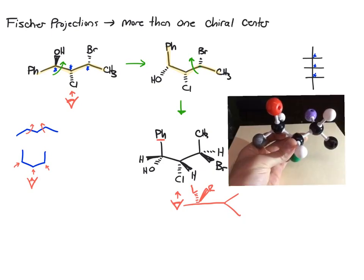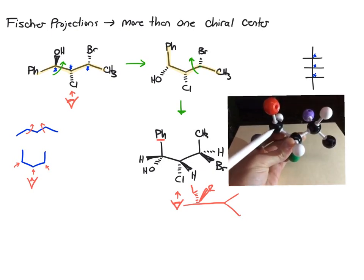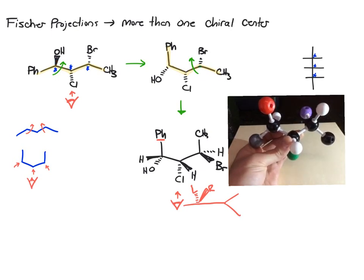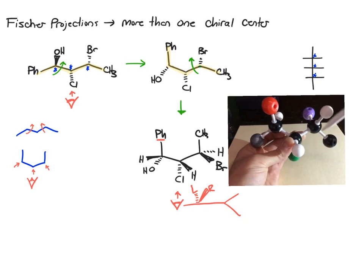Okay, so here's a molecular model of this. I'm using the silver ball as the phenyl group, then we have our CH with the OH pointed out towards you. We have our next CH with the green chlorine pointed back, our next CH with the bromine (that's the purple ball) that's pointed back, and then our CH3.